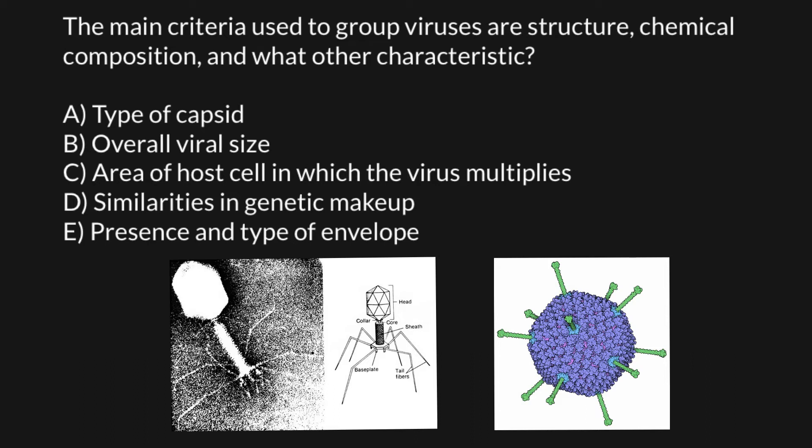One virus has nucleic acid that is DNA-based, and the other has nucleic acid that is RNA-based. So Answer C cannot be used as a reliable method for grouping viruses.